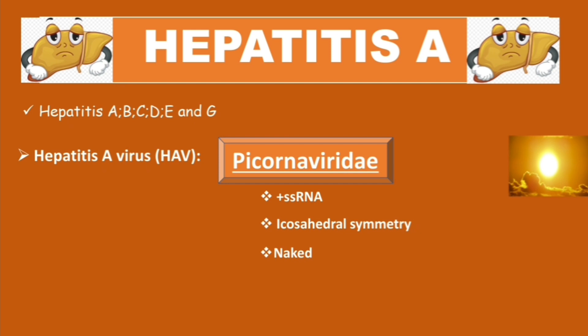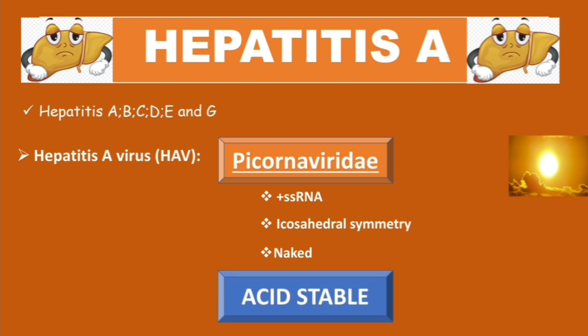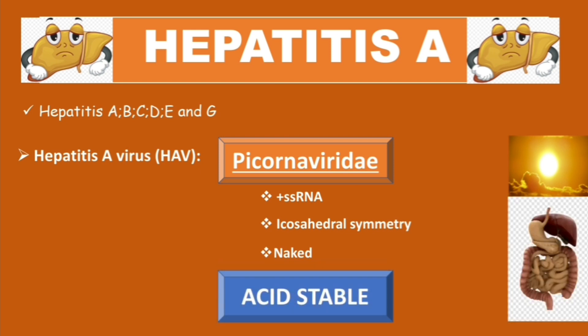HAV is naked, meaning it does not have a lipid envelope. Hepatitis A virus is acid stable, meaning it is not affected by gastric juices. In this way it is shed in the stool, and it passes through the GI tract without being affected.